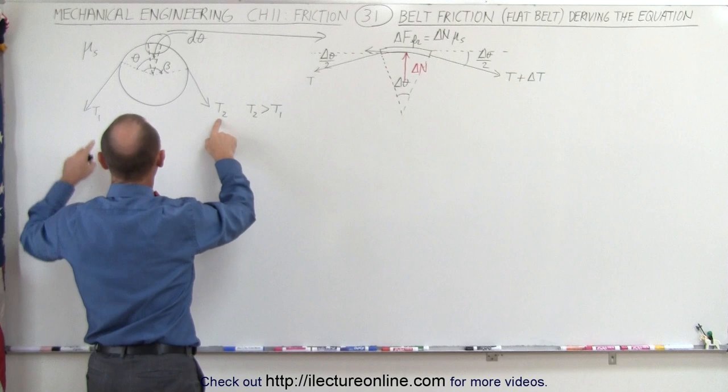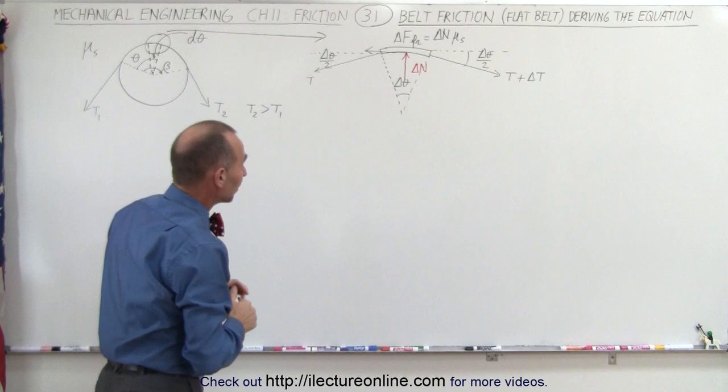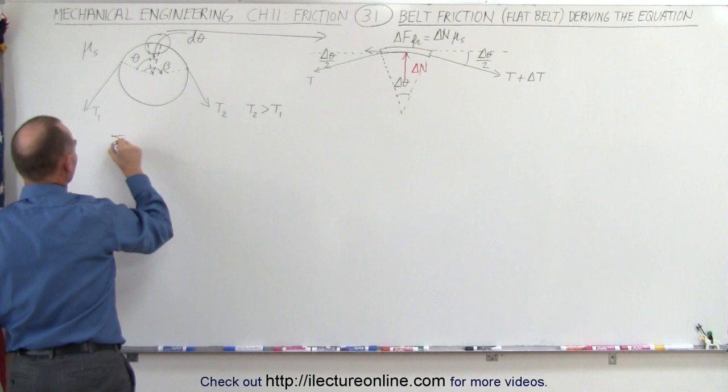Now, how do we find the difference in tension between the right and left side of a belt going over a drum or peg? We can do that by summing all the forces in the x direction, summing all the forces in the y direction, and solving simultaneously.